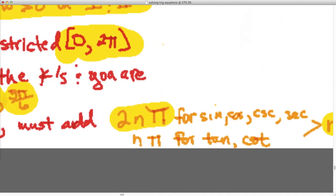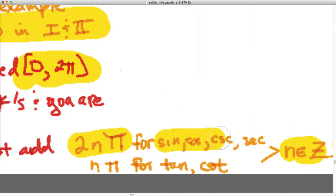So if it's tangent or cotangent, the 2π is for sine, cosine, cosecant, secant, the reciprocals. If it's tangent or cotangent, it's nπ, because the period for tangent and cotangent is π, and the period, the time it takes for one cycle to repeat, is going to be 2π.